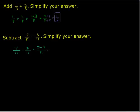So 7 minus 3 is just 4. And we have 4 elevenths, which is simplified since 4 and 11 have no factors in common.